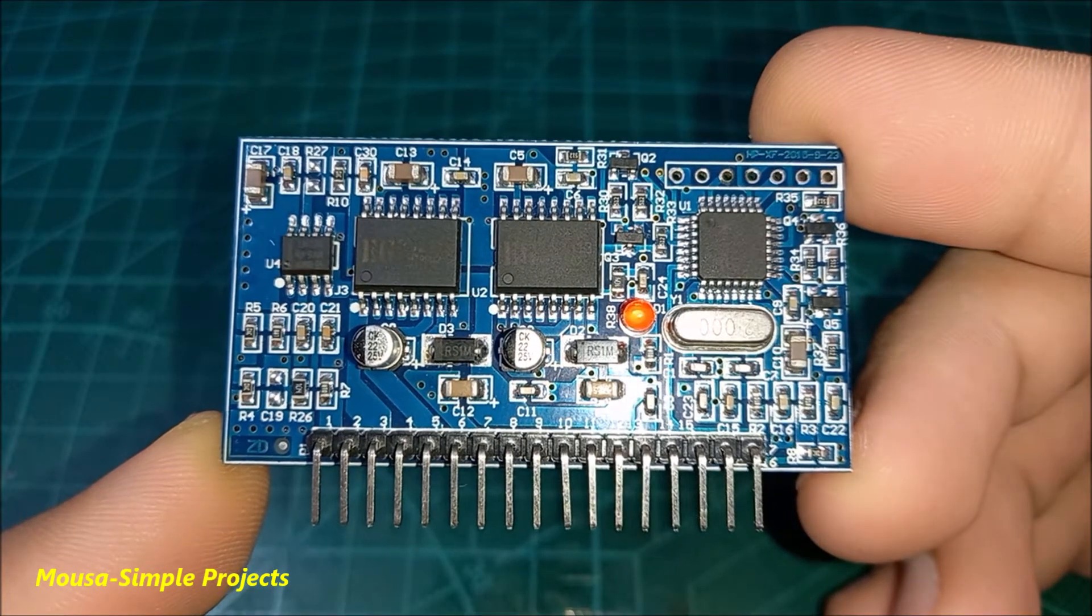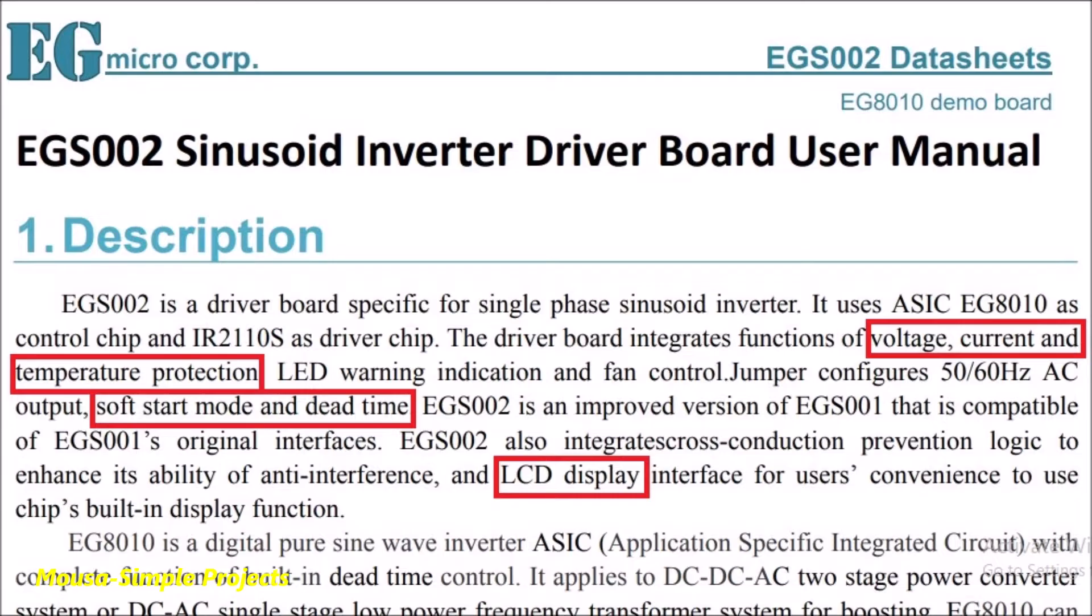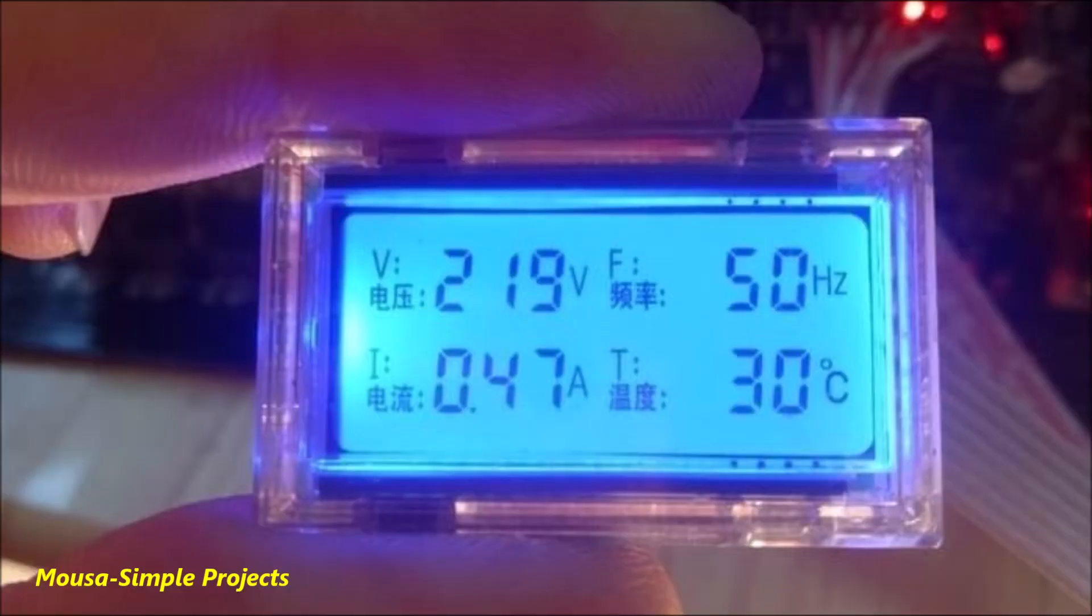Here I am using this SPWM driver board. It is so cheap and easy to use. This driver has a lot of features such as soft start, controlling the cooling fan, over voltage protection, over temperature protection, and so on. You can buy this driver with a tiny display, but I didn't. This display can show you the voltage, current, temperature, and the frequency.